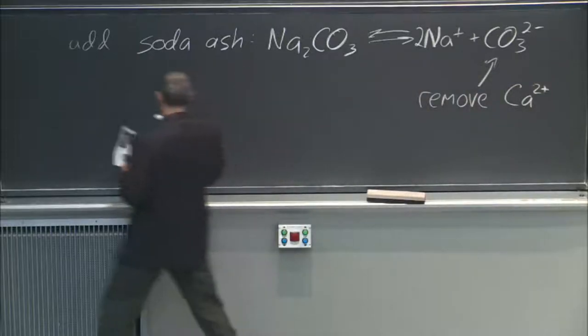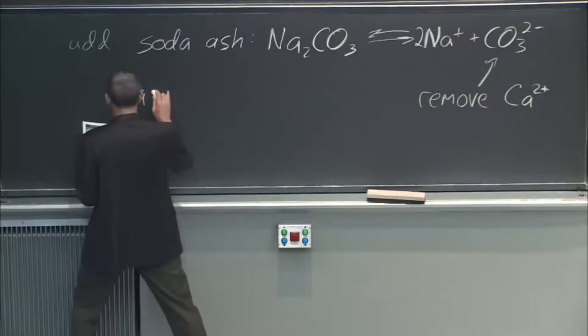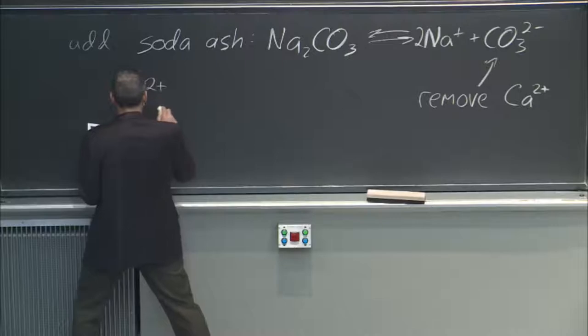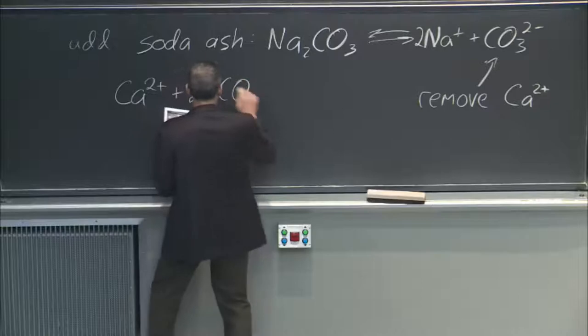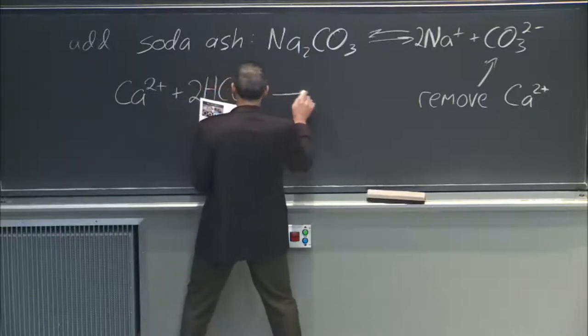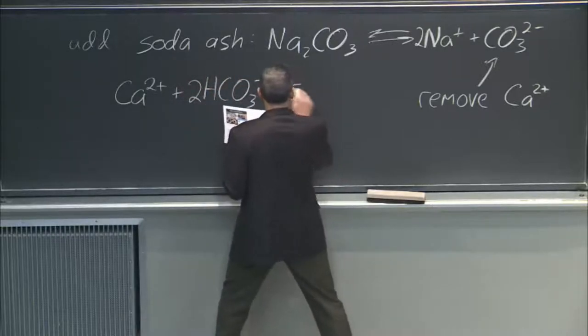It's because of what we already saw, right? This is something we've already looked at. If I have calcium 2 plus and I have some bicarbonate in there, CO3 minus, then we know that I can get precipitates.